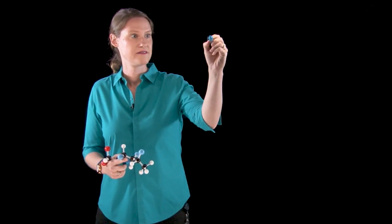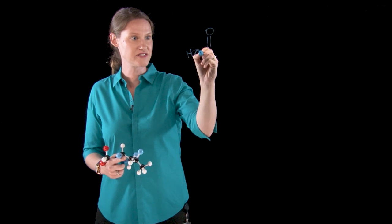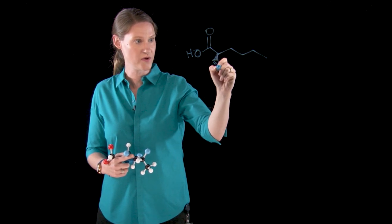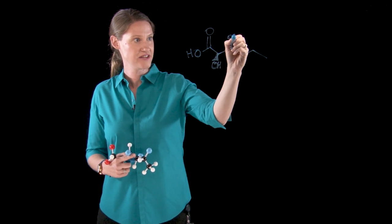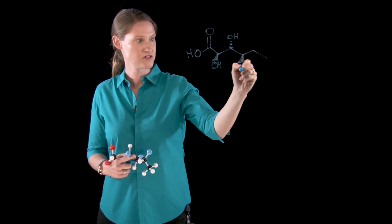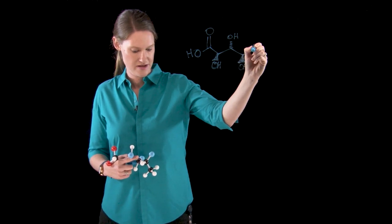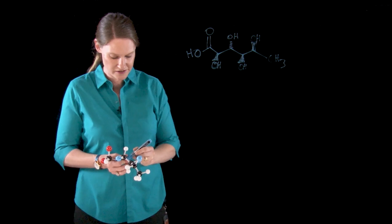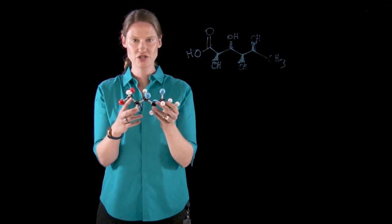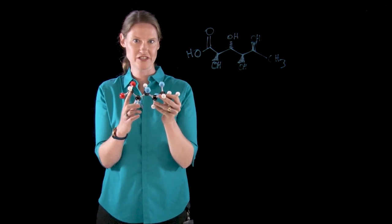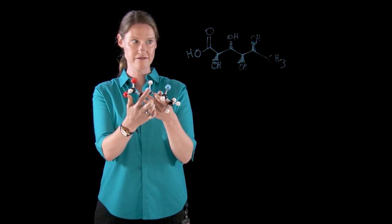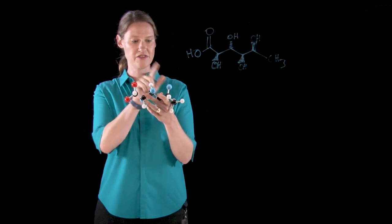I'm going to give us a line drawing to work with, just using traditional wedges and dashes. I'm going to draw a wedged OH, dashed OH, wedge OH, and another wedge. And then this is just a CH3. I made this model to match the model that I have in my hand so I can show you physically what this projection looks like. I have an OH projecting towards me, an OH projecting away from me, an OH coming towards me, and then another OH coming towards me.